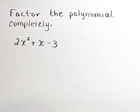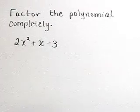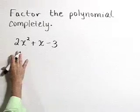Factor the polynomial completely. 2x squared plus x minus 3. Here we have a trinomial.